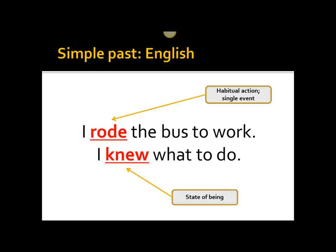Looking first at English — what is the simple past? The first sentence, "I rode the bus to work," reports a habitual action: I rode the bus to work every day. Or it could be a single event in the past, or a state of being: I knew what to do. In each case, it's a simple past — it's one verb, not a construction with a helper verb like "I have ridden the bus to work" or "I have known what to do." That's essentially the simple past in a nutshell in English.